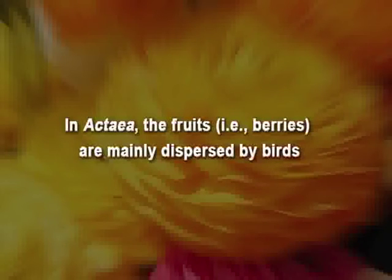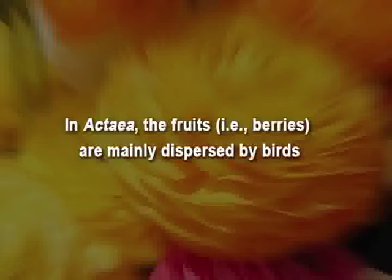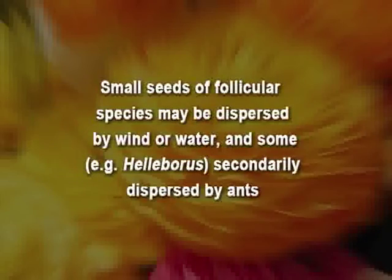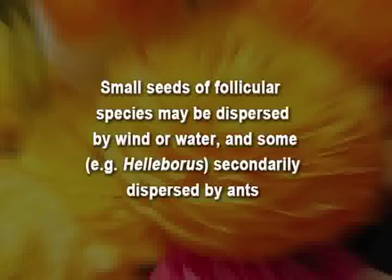Fruits in the case of Actaea are berries, mainly dispersed by birds. In the case of follicular species — those species where the fruit is a follicle — the seeds are very small and may get dispersed by wind or water. And some, for example Helleborus, are secondarily dispersed by ants.